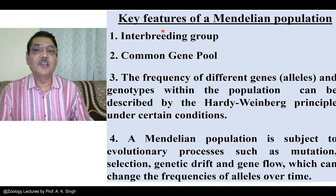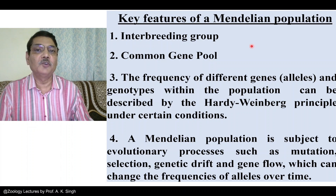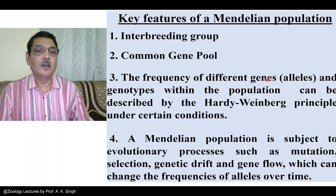The key features of a Mendelian population are: it is an interbreeding group of individuals; it possesses a common gene pool, meaning the total of all genes present in that population. The frequency of different genes, their alternative forms (alleles), and their genotypes within the population can be described by the Hardy-Weinberg principle under certain conditions.